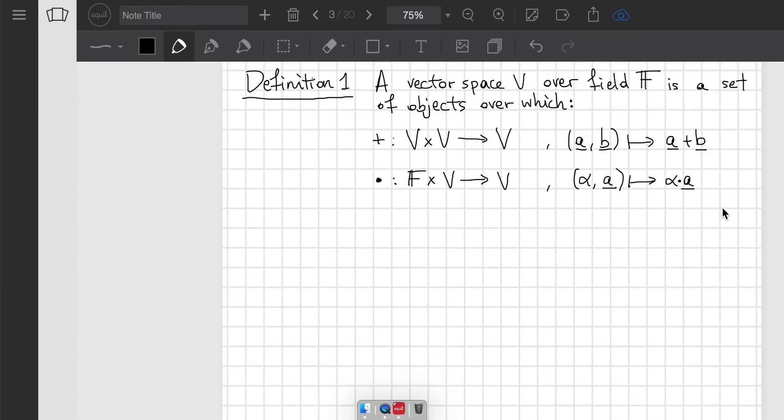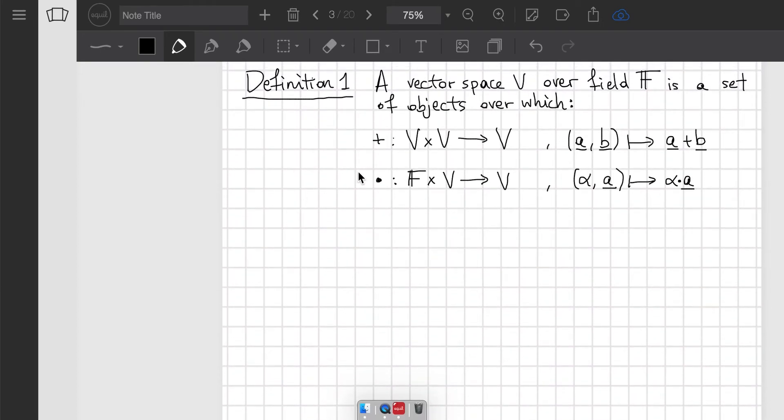But this is not it, because these two operations have to satisfy a certain set of conditions. So for all vectors x, y, z belonging to V, and for all elements alpha and beta of the field F over which the vector space is defined, we have these 10 conditions that must be met.